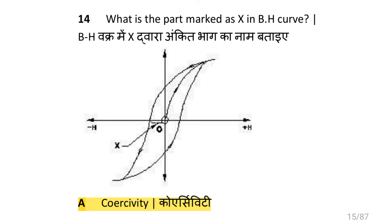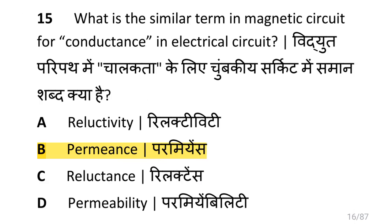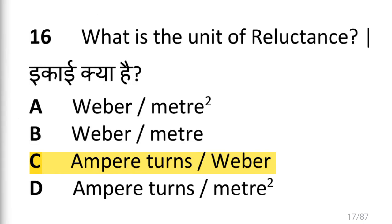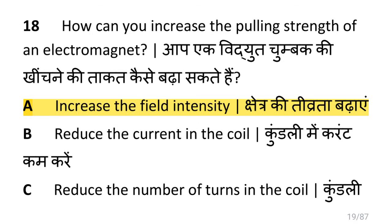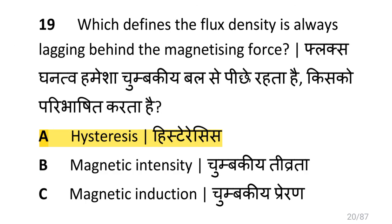What is the part marked as S in the BH curve? That is coercivity. What is the similar term in a magnetic circuit for conductance in an electrical circuit? That is permeance. What is the unit of reluctance? That is ampere-turns per Weber. What is the correct expression of capacitance C if the electric charge is Q and the voltage is V? That is C = Q/V.